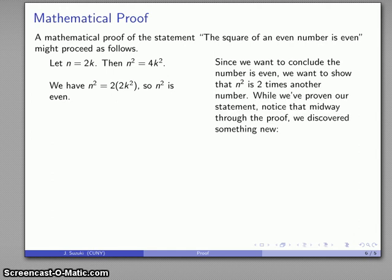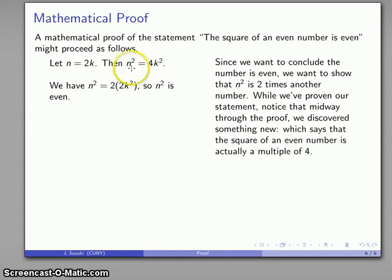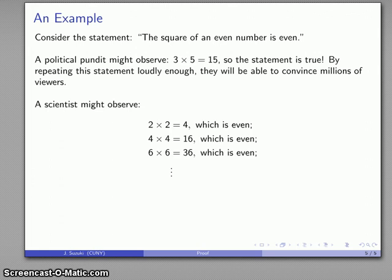Now we've proven our statement but it's worth noticing that halfway through our statement we actually discovered something else. What we discovered is that n squared is four times k squared, which is to say we've actually discovered that the square of an even number is not just even. That's our last statement. But in fact it's a multiple of four. Now if we go back to our empirical evidence now that we know to look for it, we do see that the square of an even number is in fact a multiple of four. And if we review our empirical evidence it also supports our conclusion.